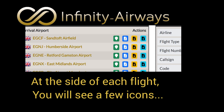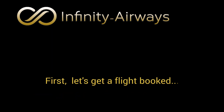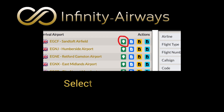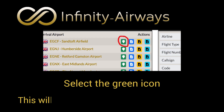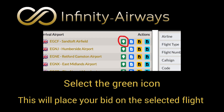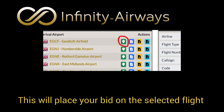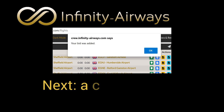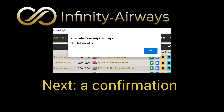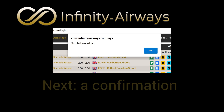At the side of each flight, you'll see a few icons. First, let's get a flight booked. Select the green icon — this will place your bid on the selected flight. You'll get a friendly confirmation to say this is completed.